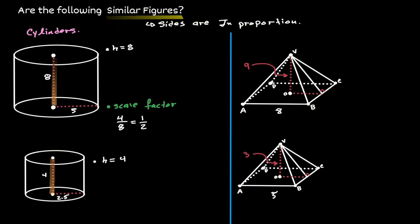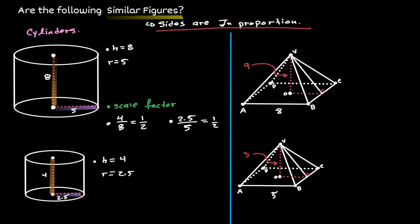Just by comparing both heights, it's not sufficient to define the scale factor — we have to confirm it. Let's see if we obtain the same value when we compare the radius of the upper cylinder with the radius of the lower cylinder. When we divide 2.5 over 5, notice that this is also 1 half. When we compare both heights we get 1 half, and when we compare both radii we also get 1 half. Then we can determine that the sides of these figures are in proportion, and we can conclude that we have similar figures.